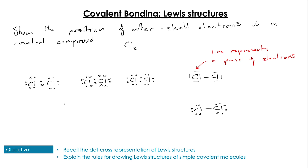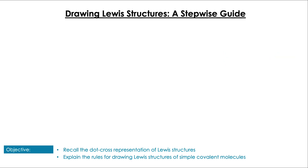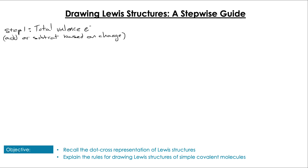I'll be using lines to represent pairs of electrons in this video. I'm going to outline a stepwise guide for drawing simple covalent molecules. Step one is to total the valence electrons — add up all the valence electrons of the molecule — and we add or subtract based on any charge: if there's a negative charge we add one electron, and for a positive charge we take away an electron.